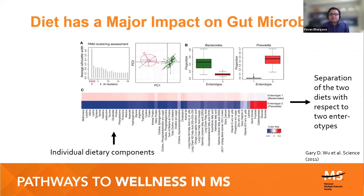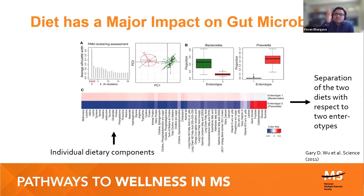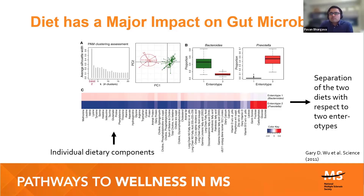Diet has a major impact on the composition of your gut microbiota. A 2011 study found that people fell into two buckets: those with more Bacteroides or more Prevotella bacteria. Dietary composition was really strongly correlated with gut microbiome makeup. Even more convincing evidence came from another study where they had people actually change their diet.